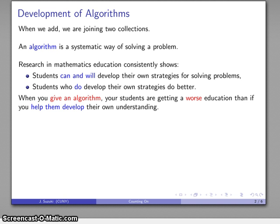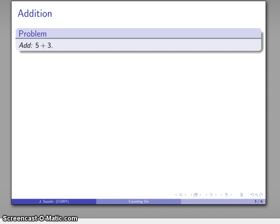Here's an important thing. When you give students an algorithm, when you say here is the systematic way of solving this problem, you're not letting them develop their own strategies. They are getting a worse education than if you help them develop these strategies. So what am I about to do? Well, I'm about to give you a strategy for solving a problem, so take that for what it's worth. But I won't give it out completely.